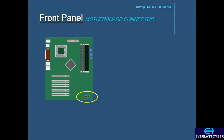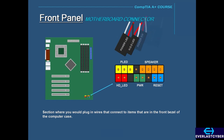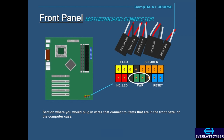Typically located at the bottom right-hand corner of the motherboard, you'll find what's called the front panel connector. This is where you would plug in wires that connect to items in the front bezel of the computer case. For instance, there is the power button connector, which turns the computer on or off. There is also the power LED, which indicates when the computer is on, off, or in standby mode.